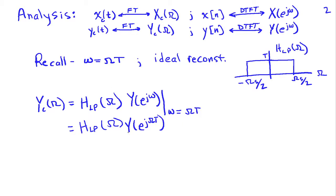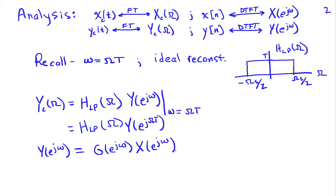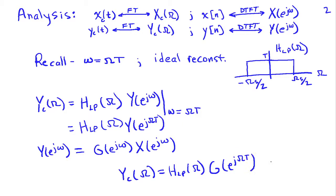Working backwards, Y(e^jω) is just the product of the discrete-time filter frequency response G(e^jω) times the discrete-time Fourier transform of the input X(e^jω). Putting things together, we conclude that Yc(Ω) equals HLP(Ω) times G(e^jΩT) times X(e^jΩT).